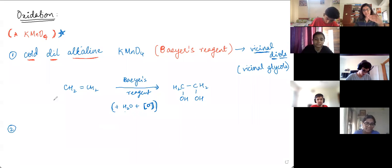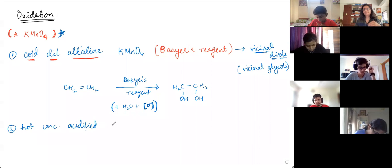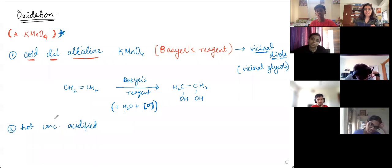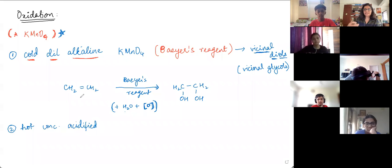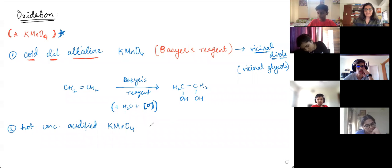Now increase the potency: increase the temperature - make it hot, make it concentrated, and instead of alkaline, make it acidified. So when you use hot concentrated acidified KMnO4, the oxidation products you get are either carbonyls or carboxylic acids.